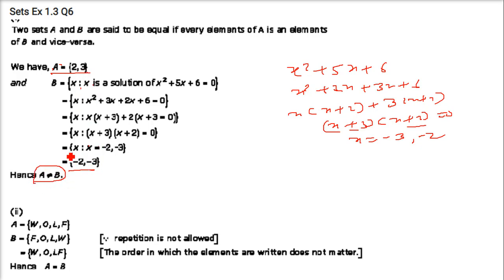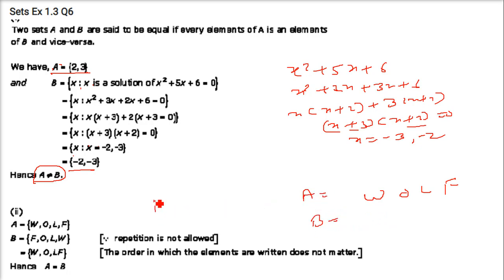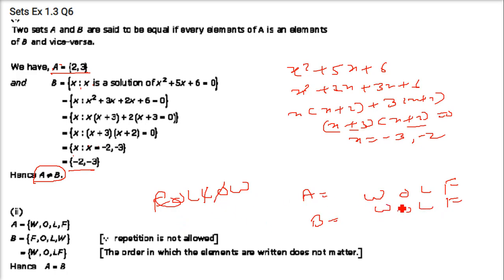The second part: A is x such that x is a letter of the word 'wolf' — W, O, L, F. B is x such that x is a letter of the word 'follow' — F, O, L, L, O. Cancelling repeats: F, O, L, W. So A and B are equal.